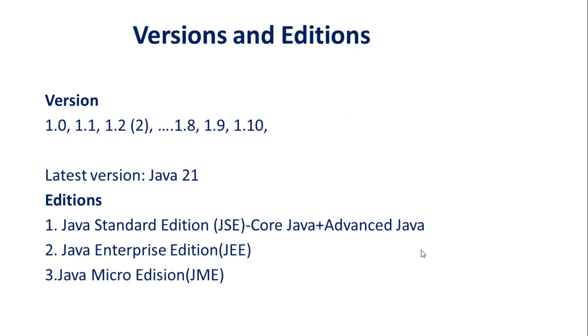Java has versions and editions. The latest version is 21. It has three editions: Java Micro Edition, Java Standard Edition, Java Enterprise Edition. Java Micro Edition is used for developing small applications which are running in microcontrol devices. Standard Edition is used for developing standalone applications, and Enterprise Edition is used for developing enterprise-wide applications.